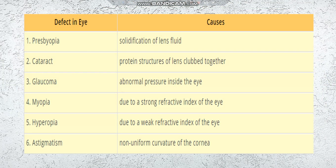Presbyopia is called solidification of lens fluid. Cataract is caused by protein structures of the lens clubbing together, which makes a foggy appearance in the vision. Glaucoma causes an abnormal pressure inside the eye and can also be called as eye pressure.